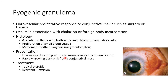Pyogenic granuloma usually presents a few weeks after surgery for chalazion, strabismus, or enucleation. It presents as a rapidly growing, dark pink, fleshy conjunctival mass. The treatment is with topical steroids, and for resistant cases, excision is performed.